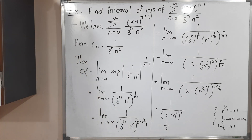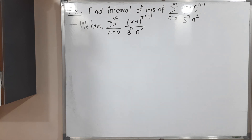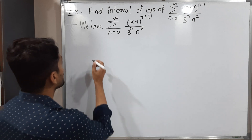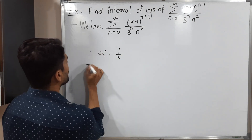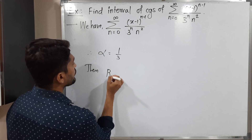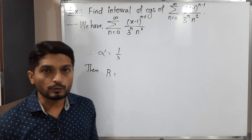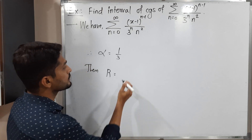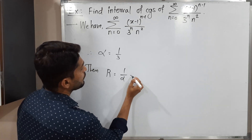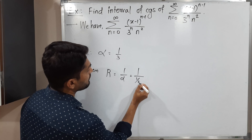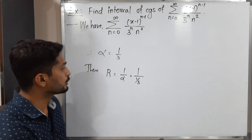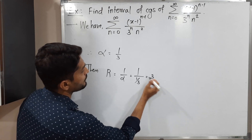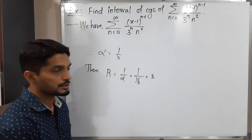Therefore alpha is 1/3. The radius of convergence r equals 1/alpha, which is 1 divided by (1/3). Since 3 is in the denominator of the denominator, it moves to the numerator, giving r equals 3. So the radius of convergence is 3.